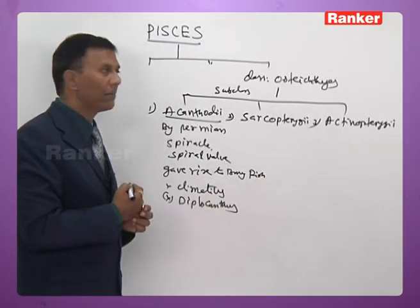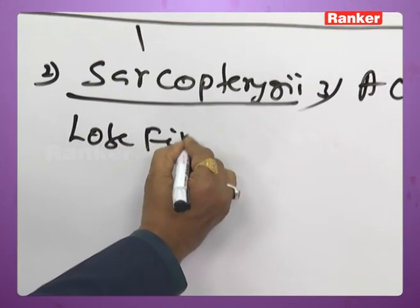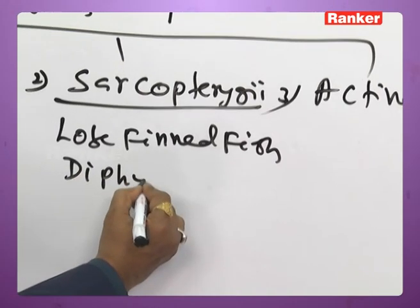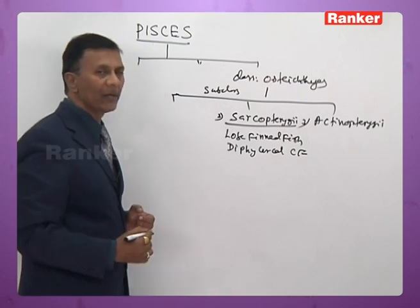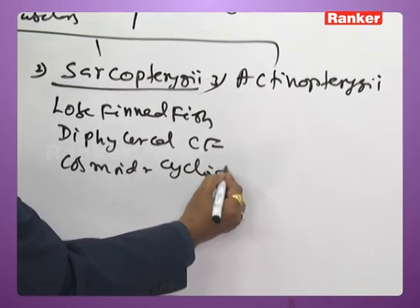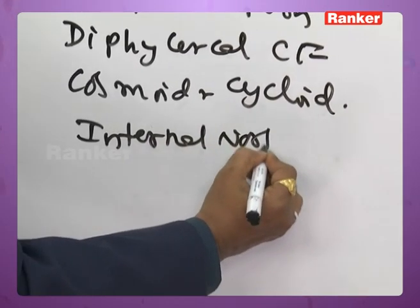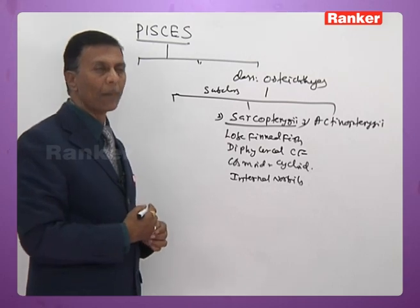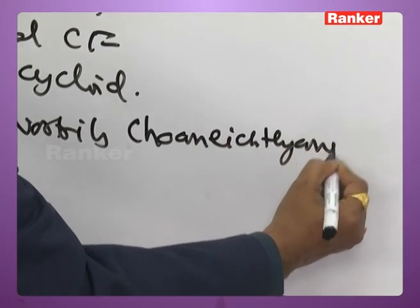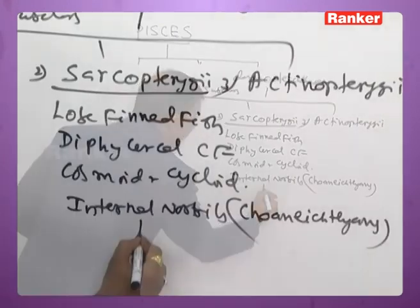Subclass Sarcopterygii — commonly called lobe-finned fish. Most have a diphycercal type of caudal fin. Scales are either cosmoid or cycloid. Internal nostrils are noticed for the first time in this group; that is why the Sarcopterygians are also called Choanichthyans. Sarcopterygii is divided into two orders: order Crossopterygii and order Dipnoi.